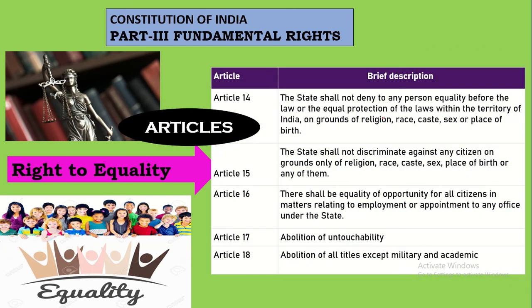Article 14 deals with the provision that the state shall not deny any person equality before the law or equal protection of law within the territory, irrespective of the grounds of religion, race, caste, sex, or place of birth. So Article 14 explicitly states that the government shall not deny any person — of any religion, caste, or place of birth — equality before the law. You will be protected within the territory of India and treated equally.